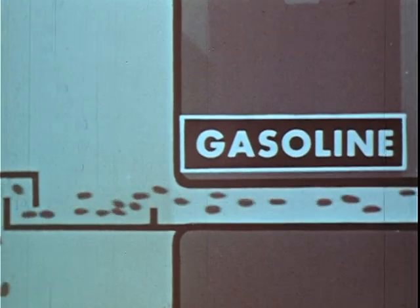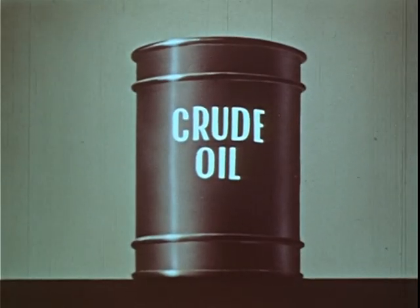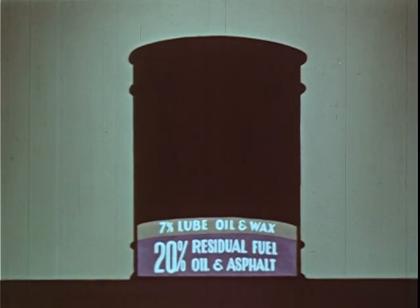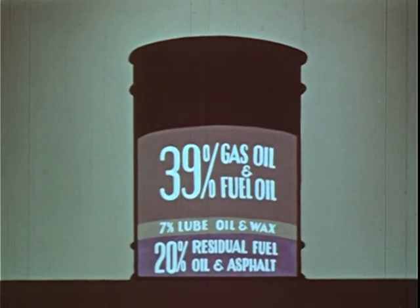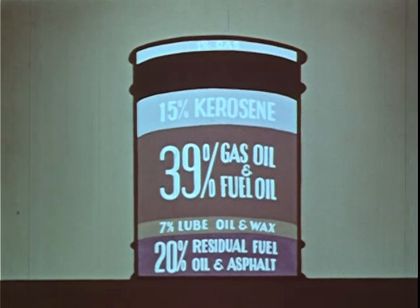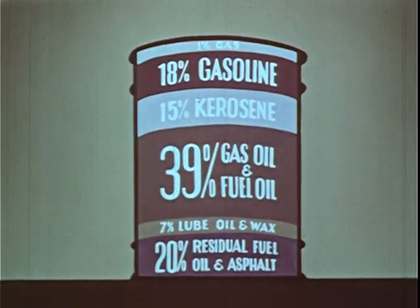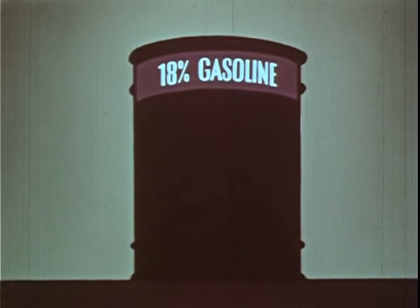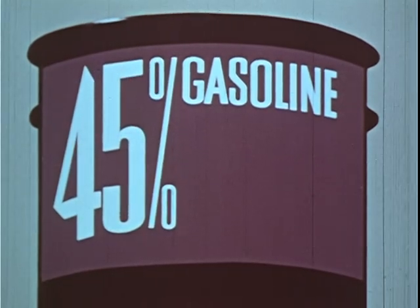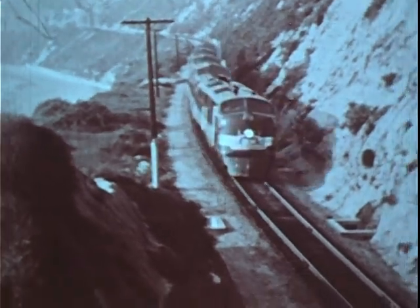In the average crude oil, only a limited amount of gasoline is present. From simple distillation, a barrel of crude oil produces 20% residual fuel oil and asphalt, 7% lube oil and wax, 39% gas oil and fuel oil, 15% kerosene, 1% gas, and gasoline — only 18%. Not nearly enough for today's millions of cars, but science came to the rescue by inventing the cracking process, enabling refiners to make more than twice as much gasoline from each barrel of crude.